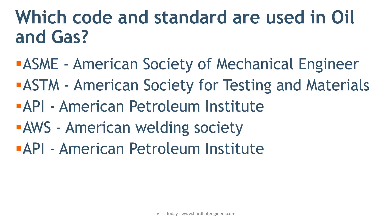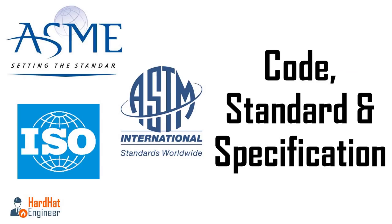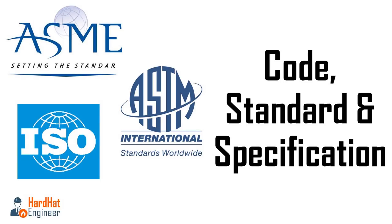Next is AWWA — the American Water Works Association. Standards published by AWWA are used in process plants for water treatment facilities and water transport pipelines. These are some of the well-known American standards and codes regularly used in any process facility such as refineries, petrochemical plants, and offshore and onshore oil production facilities. If you want to know the difference between code, standard, and specification, you can check my earlier video on that topic.